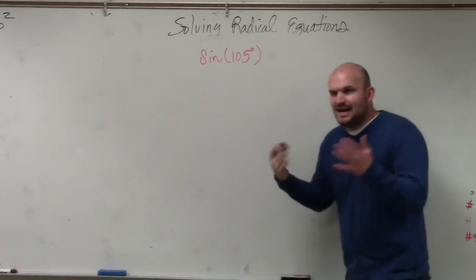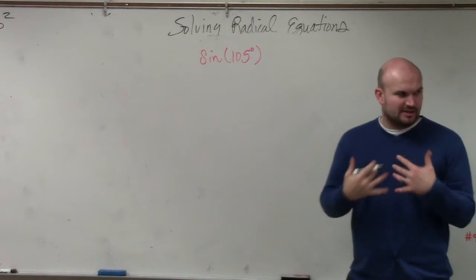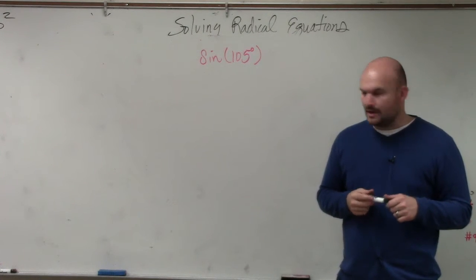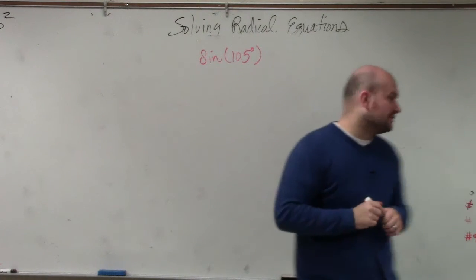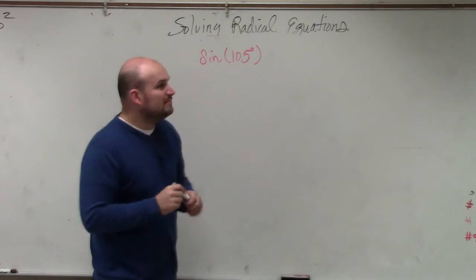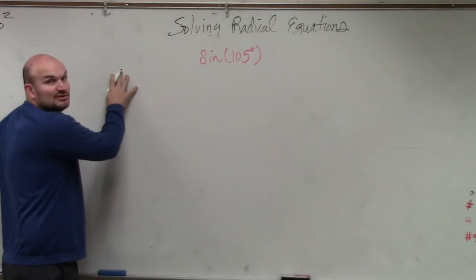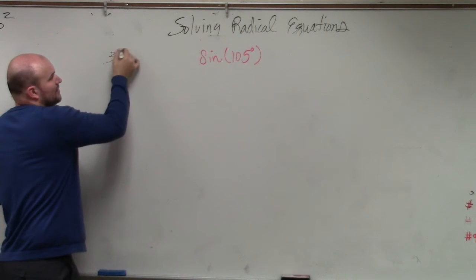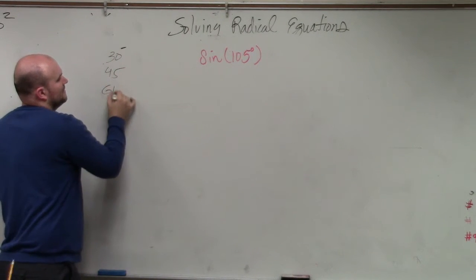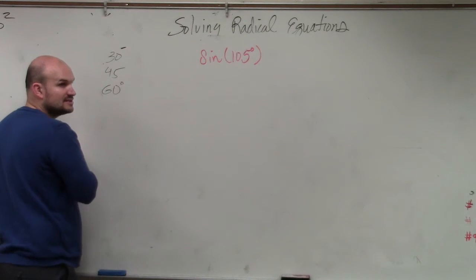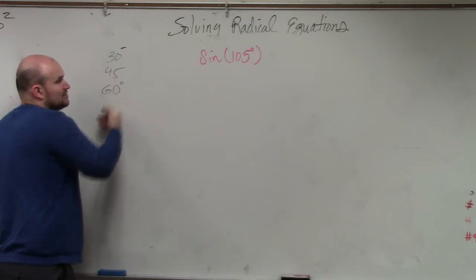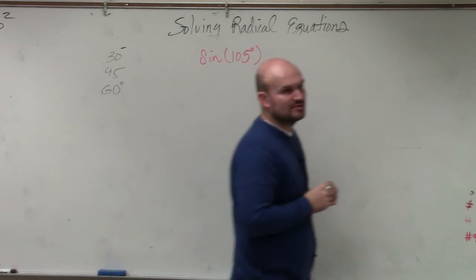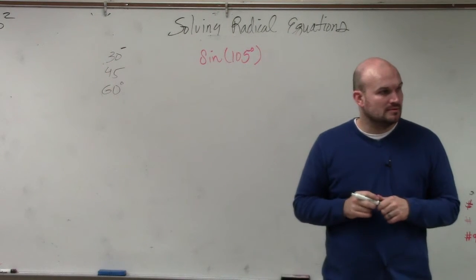The first thing I want to do is, can I rewrite 105 degrees if I'm going to find the exact value? If you want to find the sine of 105 degrees, can we rewrite this in terms of angles that we know the exact value of? We know the exact value of 30, 45, 60, and 90 degrees. So can we write 105 degrees as the sum or difference of those angles?